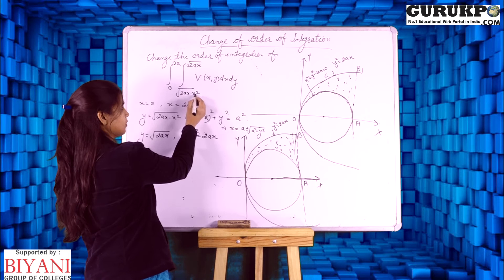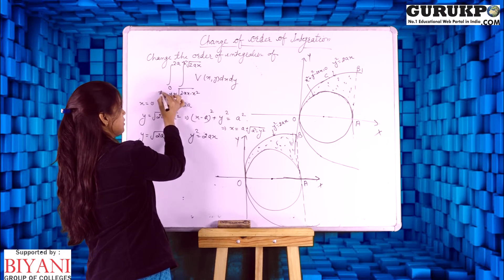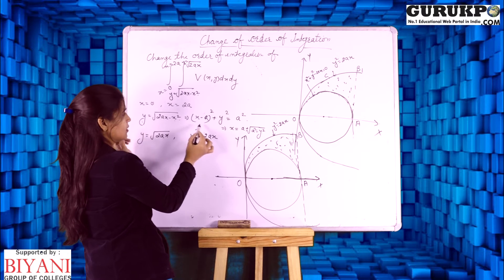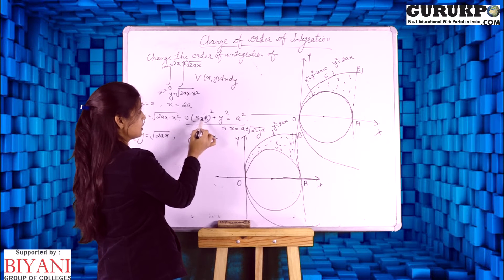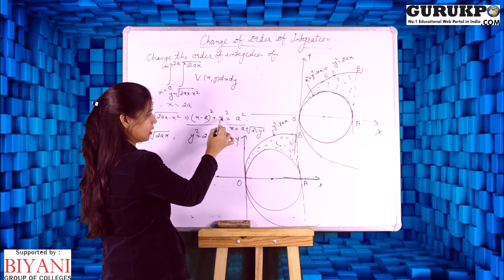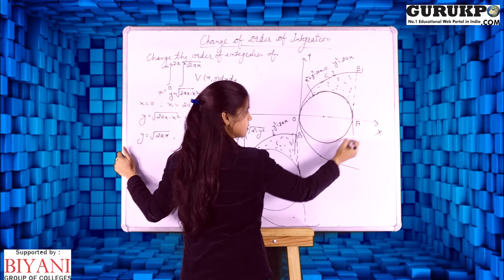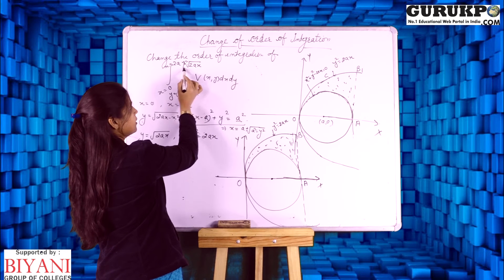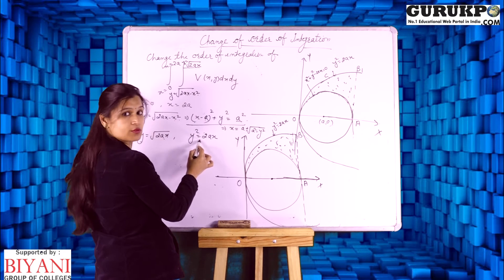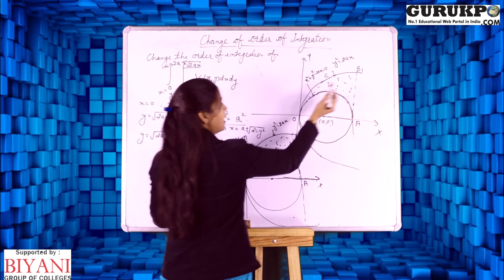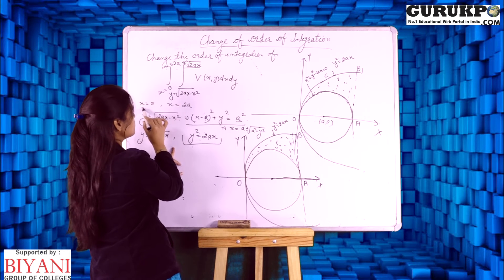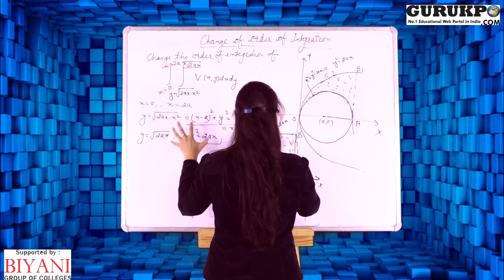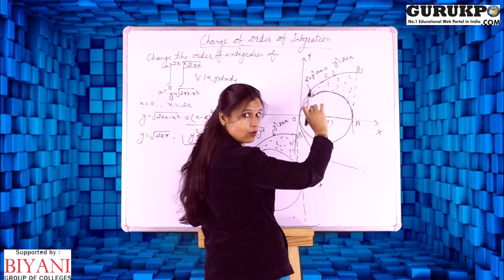Here the inner limits are in terms of x, meaning these are values of y and x is the outer variable. The curve y = √(2ax − x²) simplifies to an equation of a circle with centre (a, 0) and radius a. The second curve y = √(2ax) means y² = 2ax, which is a parabola. The x limits are from 0 to 2a. So these boundaries define the region over which we want to integrate.